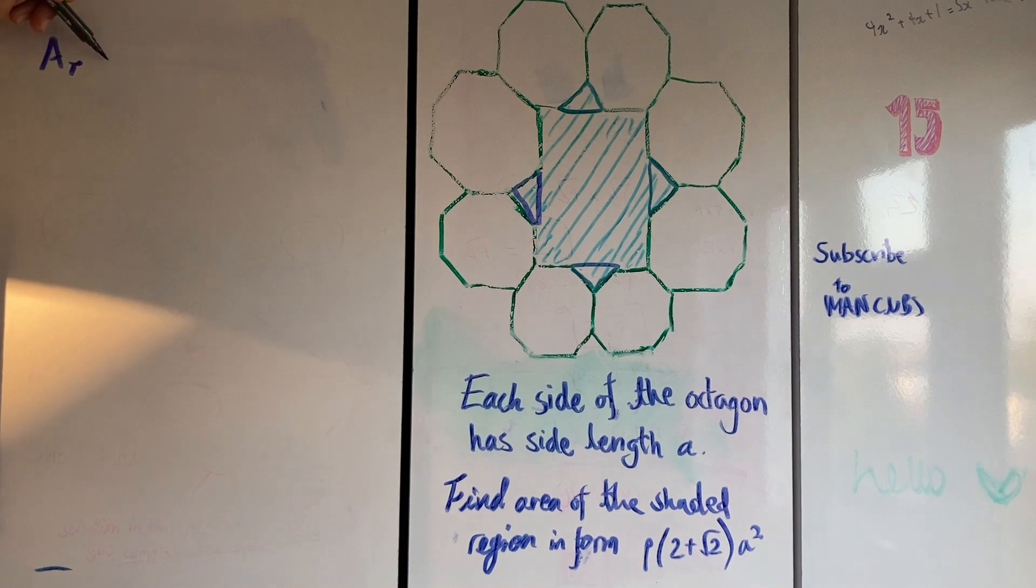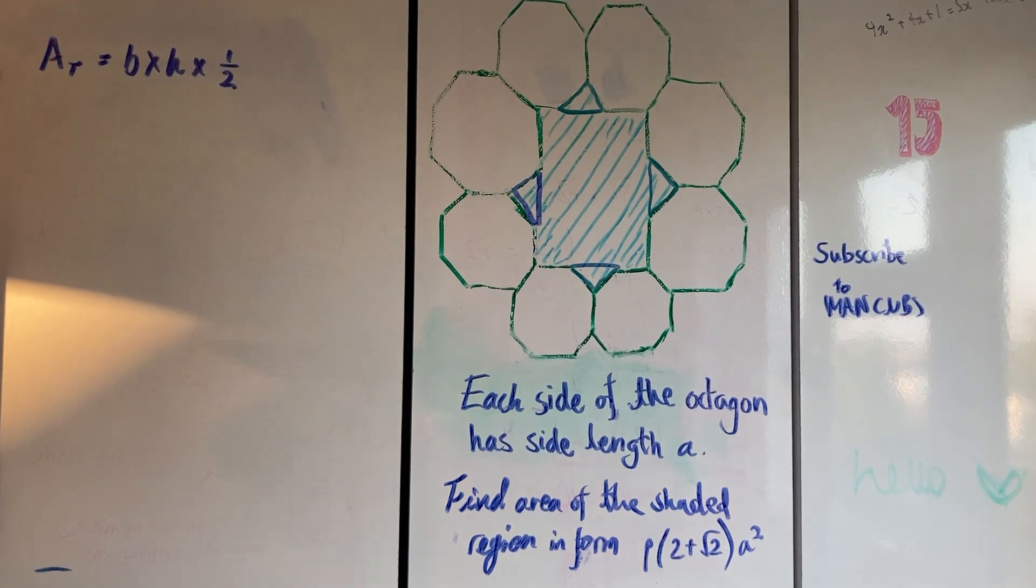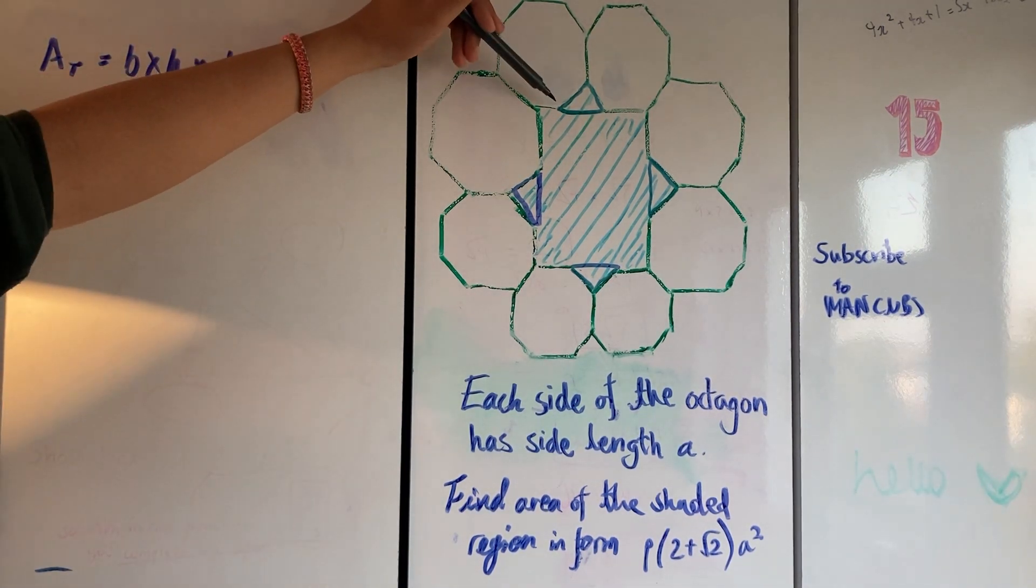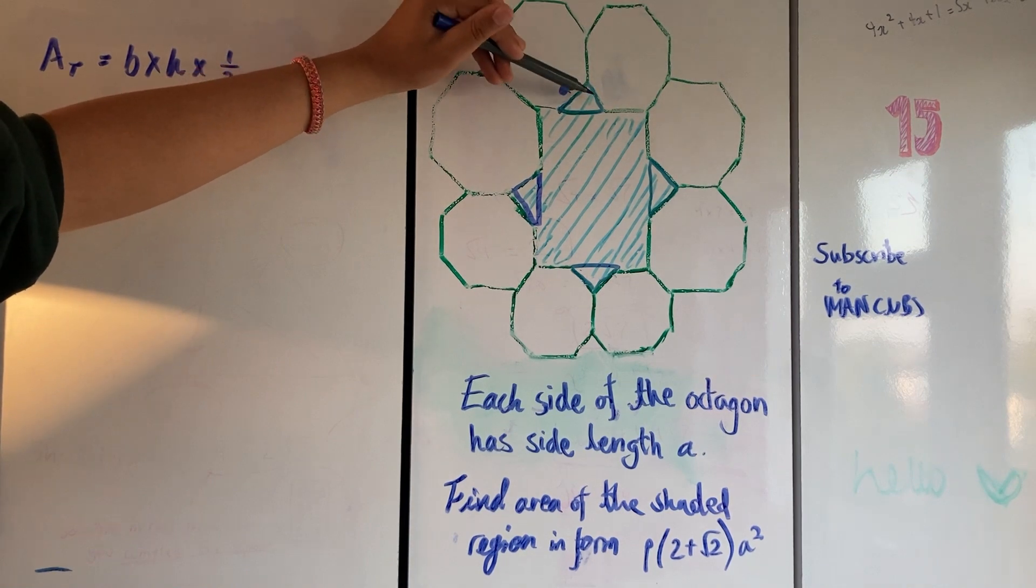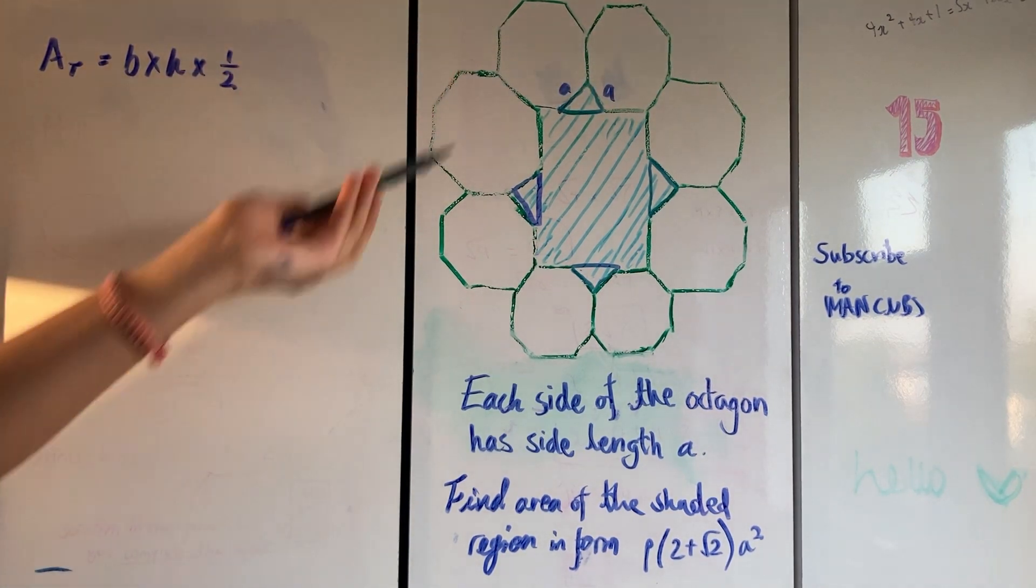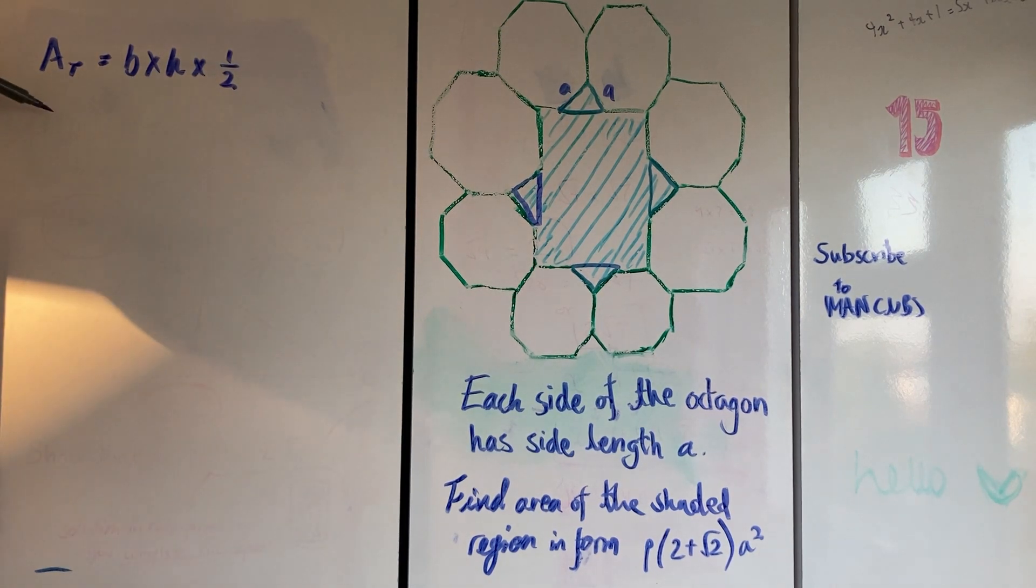First, we're going to work out the area of the triangle. What is the formula for area of a triangle? Base times height times a half, or some variation of that. Now we need to find what our base and height values are. If we flip our triangle, we've got a base of a and a height of a because both those side lengths are a.